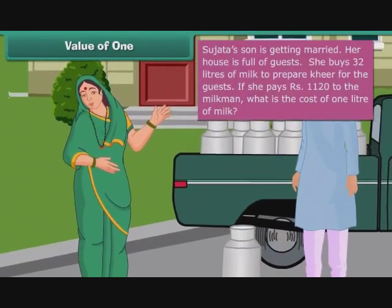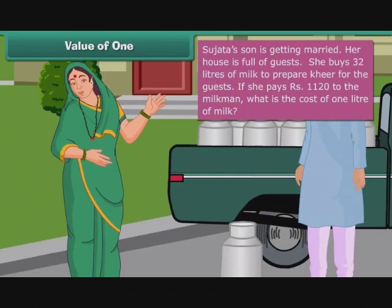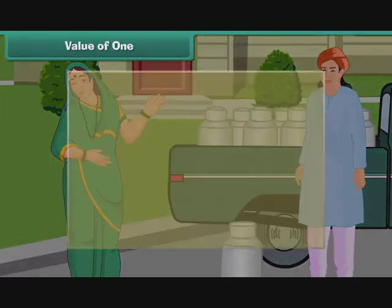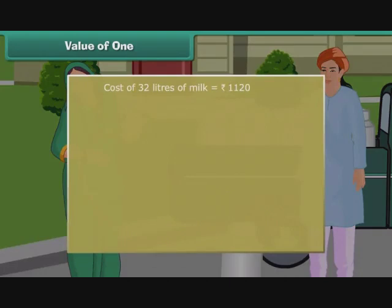Sujata's son is getting married. Her house is full of guests. She buys 32 liters of milk to prepare kheer for the guests. If she pays 1,120 rupees to the milkman, what is the cost of 1 litre of milk? Cost of 32 liters of milk is 1,120 rupees. Cost of 1 litre of milk is 1,120 divided by 32.